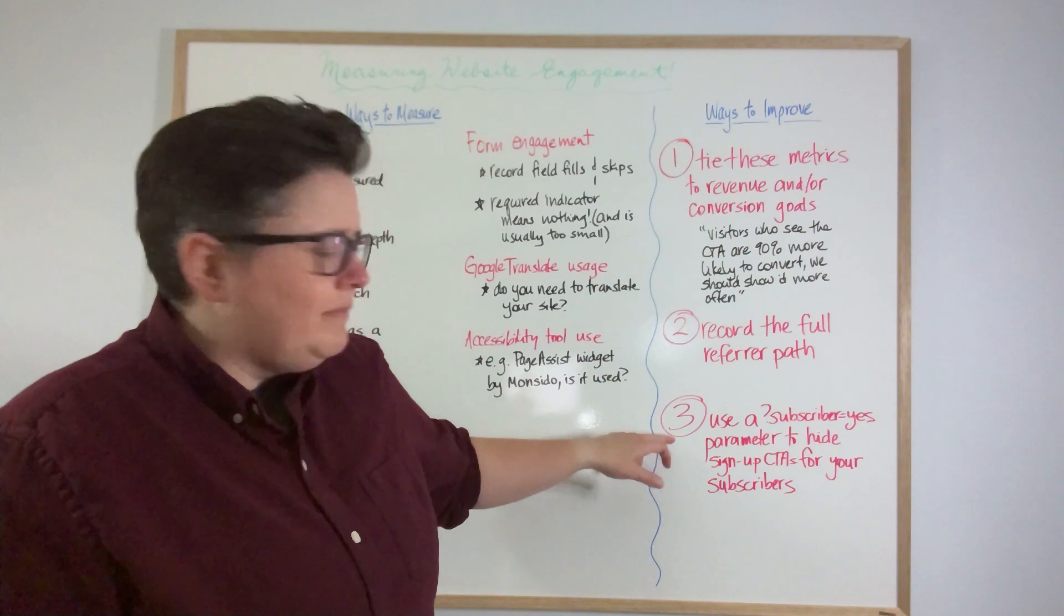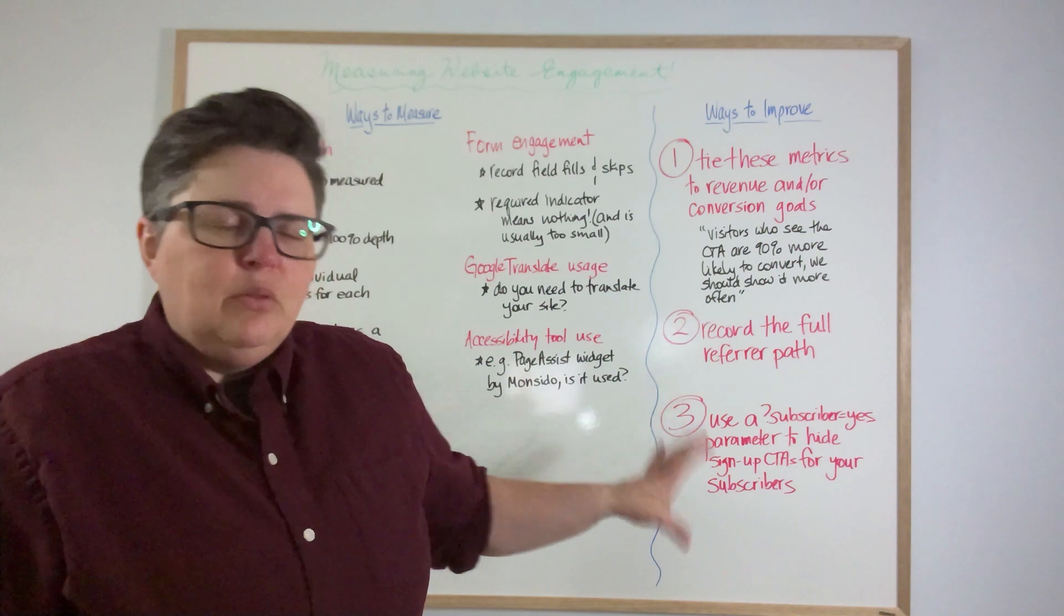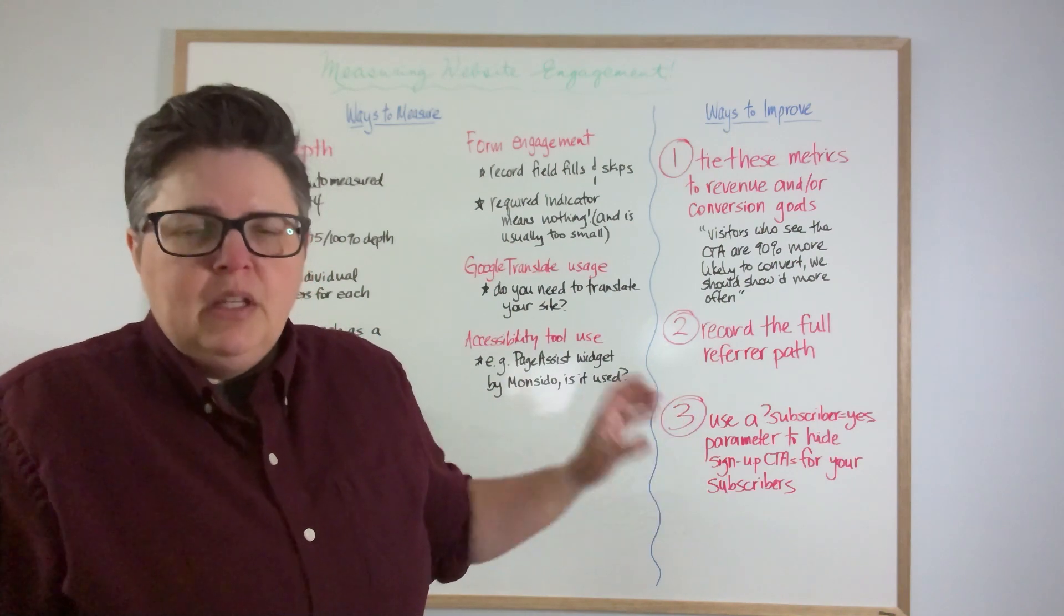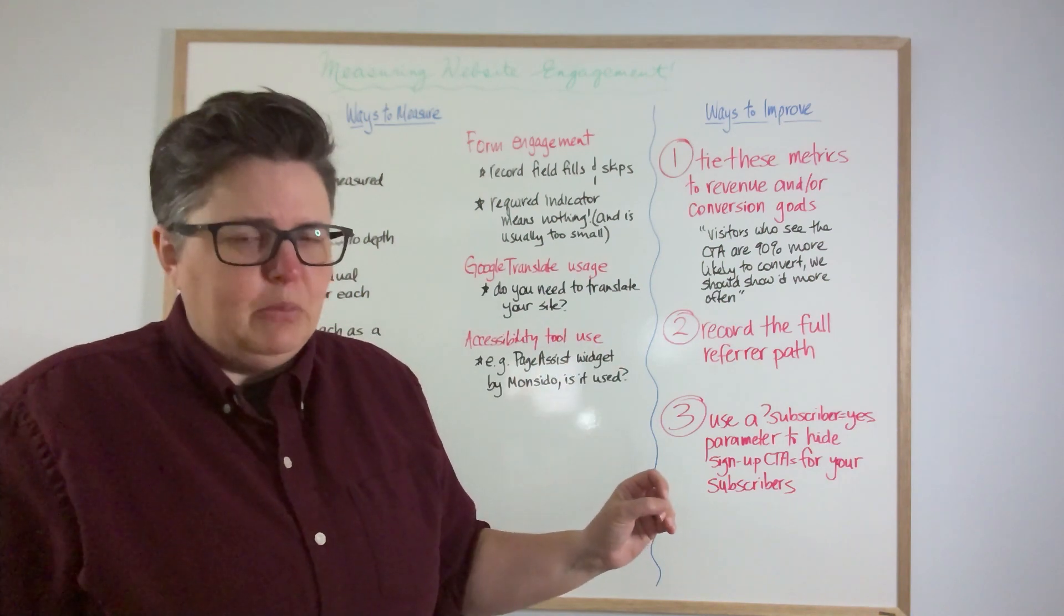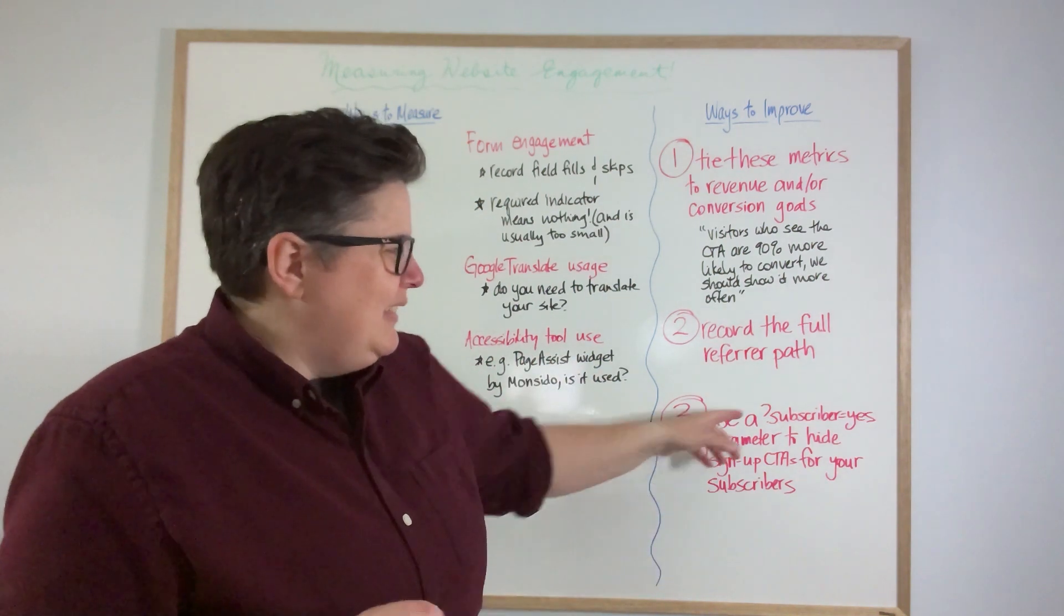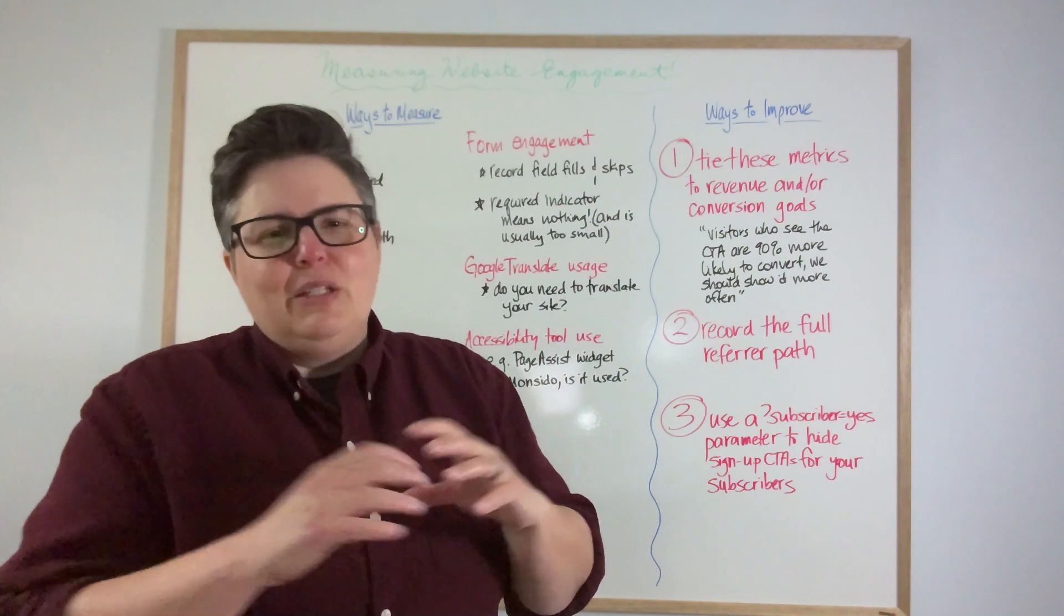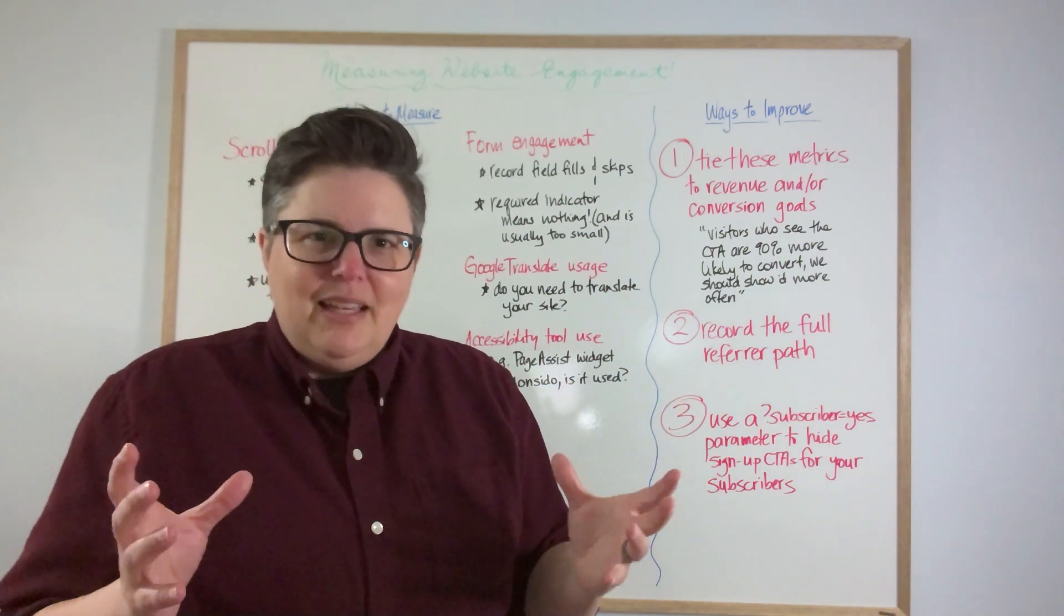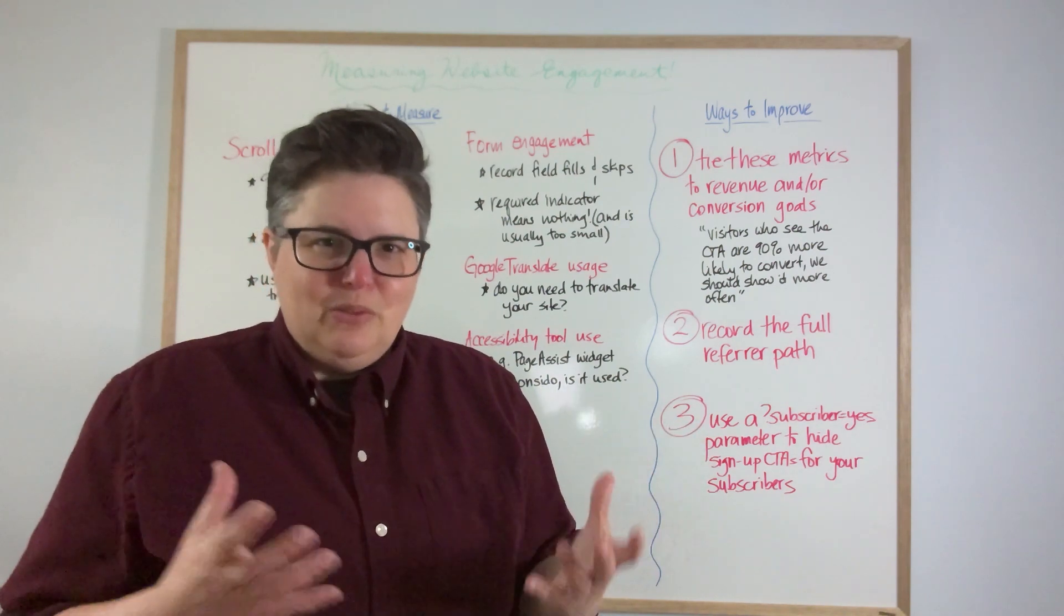And then the third thing, this is like a personal pet peeve of mine. If I'm already on your newsletter, don't show me a giant pop-up asking me to sign up for your newsletter when I click a link in your newsletter to get to your website. People think, well, I don't know how to do this. So here's how you do it. You can add a parameter to your URLs. It's like question mark subscriber equals yes, for example. Then when you deliver that pop-over CTA, don't deliver it if that parameter exists in the URL that the person is viewing.